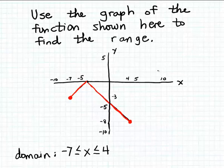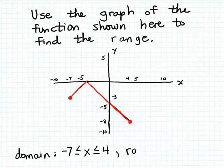In the previous example we were looking at a function represented by a graph, and we had discovered that the domain of this function was numbers between minus 7 and 4 — greater than or equal to minus 7 but at the same time less than or equal to 4. Now in this example we want to determine the range of this same function.